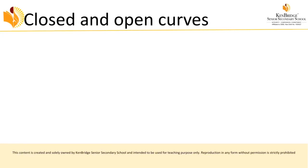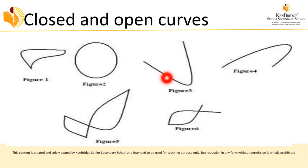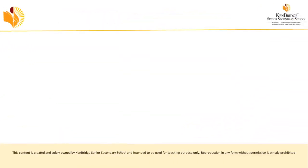The first topic is closed and open curves. You may have learned about closed and open shapes in your previous classes. A curve is closed when the starting point and ending point coincide with one another. If the starting point and ending point are not joining together, that is called an open curve. In this figure, figures 1, 2, and 5 are closed, and figures 3, 4, and 6 are open.